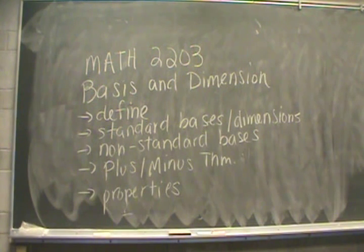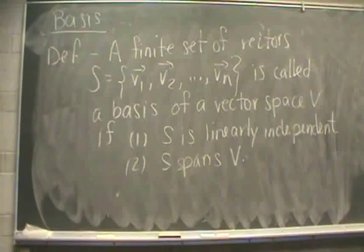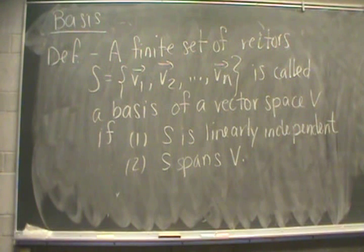Then we'll move into properties of basis and dimension. The big theorem in this section is going to be called the plus minus theorem. First, let's define what a basis is. A finite set of vectors is called the basis of a vector space if the following two things are satisfied: All of those vectors in S must be a linearly independent set, and the vectors in S must span the vector space V.